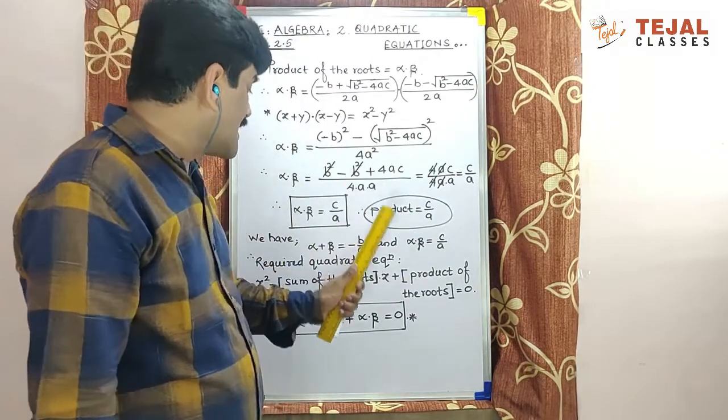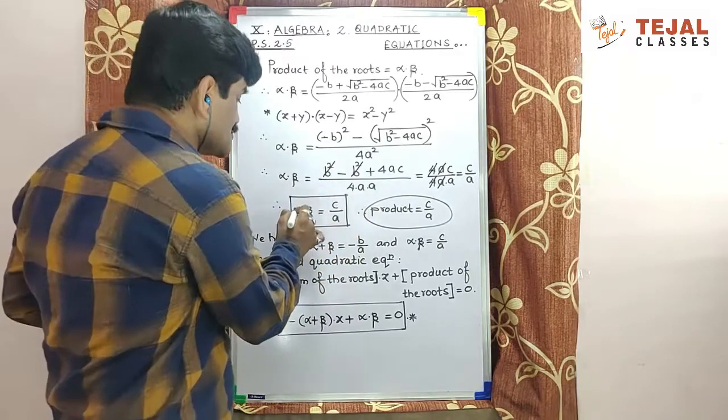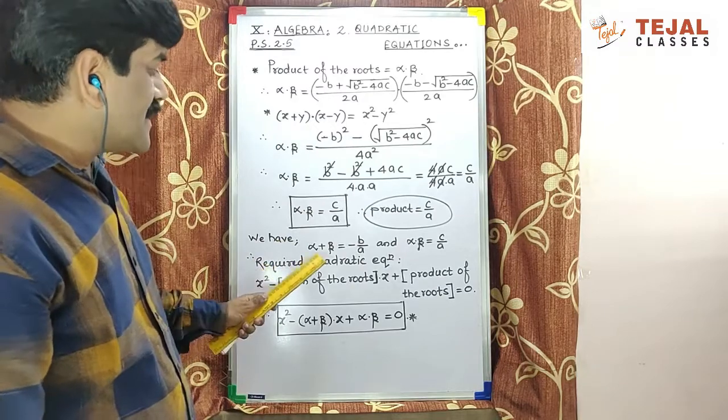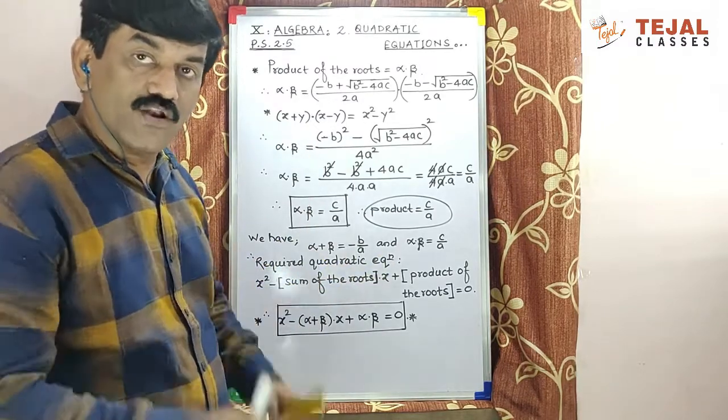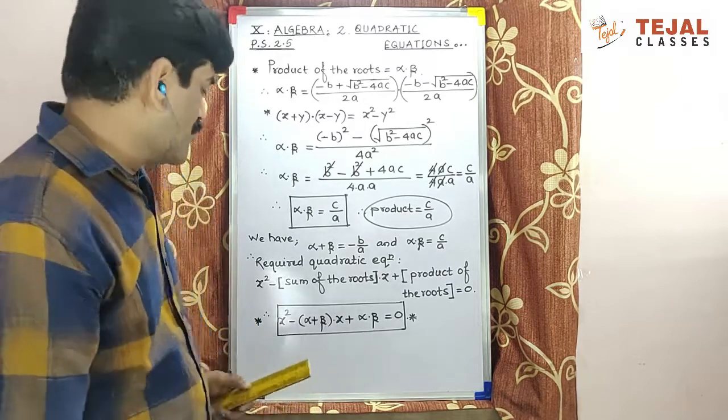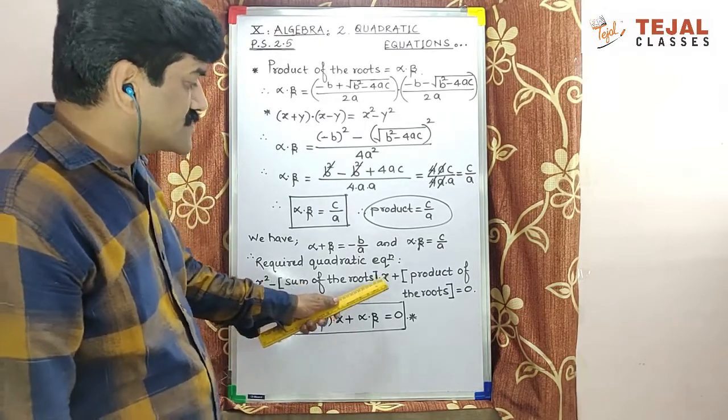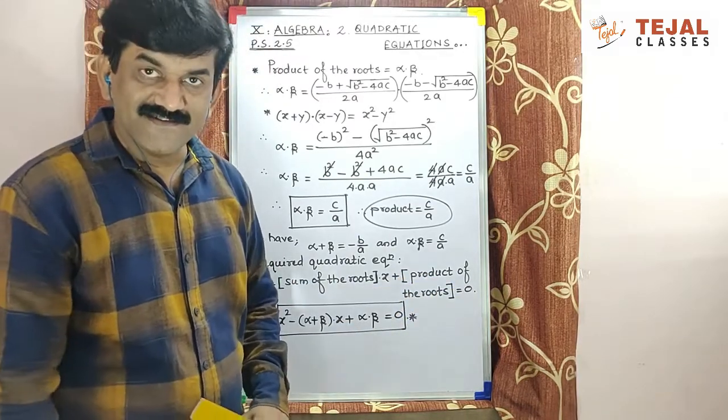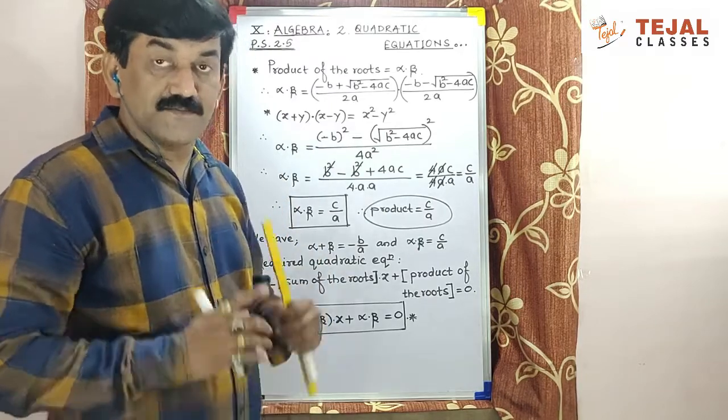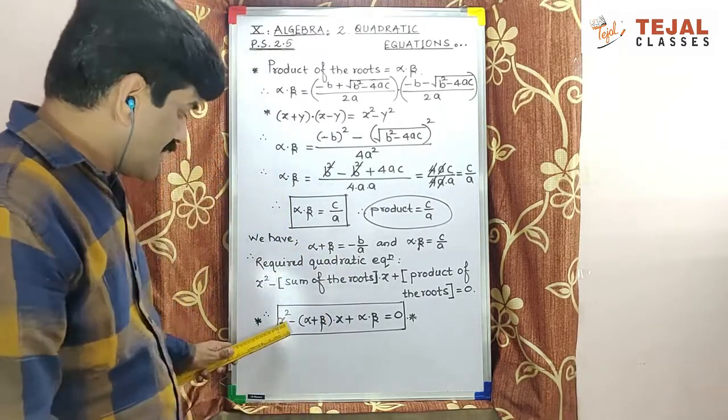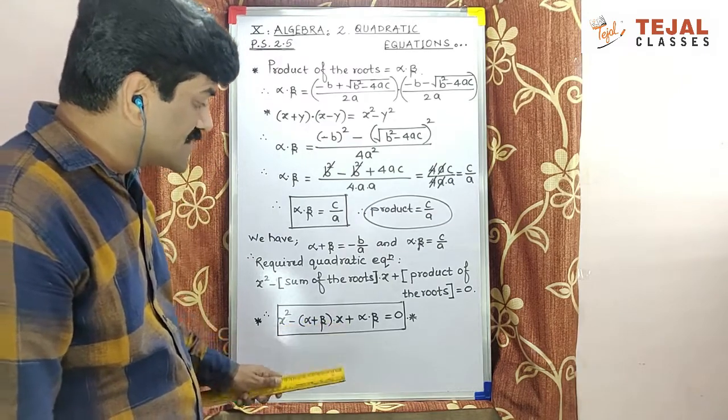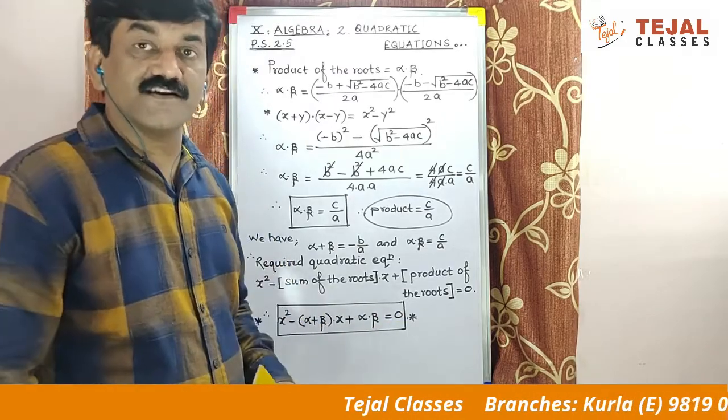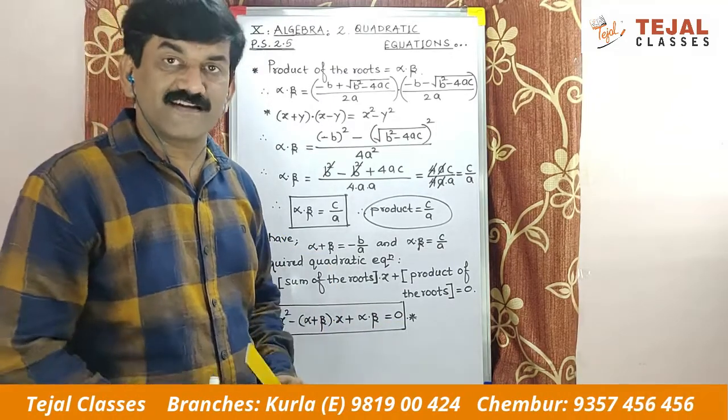Why did we solve α×β and α+β? See, the required quadratic equation is always in the form of x² - (sum of roots)×x + (product of roots) = 0. So finally, our standard equation: x² - (α+β)x + (α×β) = 0. This is our standard required quadratic equation. Got it?